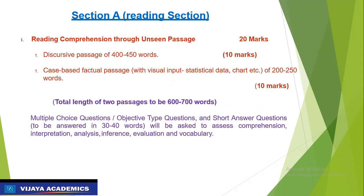Let us see the first section — the Reading section. In this section, the first question will be Reading Comprehension through unseen passages, carrying 20 marks. Here two unseen passages will be there. The first one will be a discursive passage of 400 to 450 words, carrying 10 marks. The second is a case-based and factual passage, carrying 10 marks, and the total length of the two passages is to be 600 to 700 words.